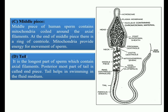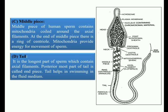The tail is the last and longest part of the sperm. It contains the axial filament, and the posteriormost part of the tail is called the end piece (NPS). The tail helps in the swimming or motility of the sperm in the female genital tract.